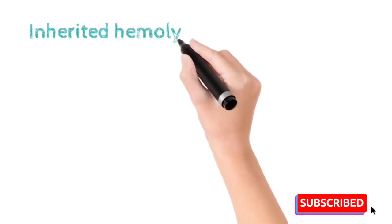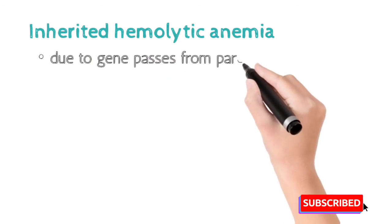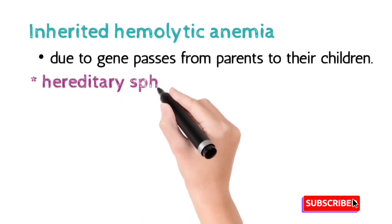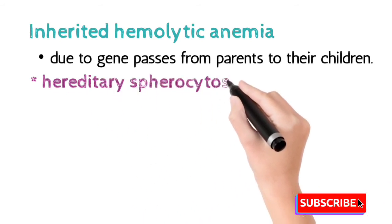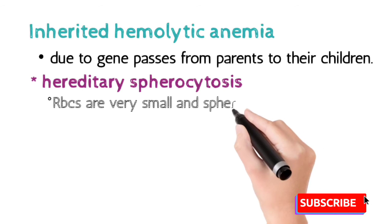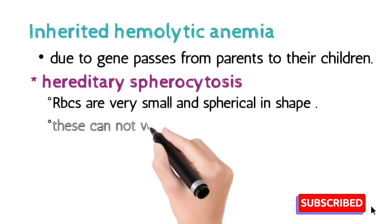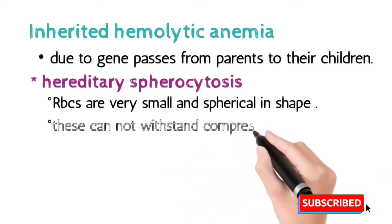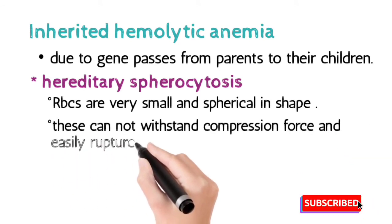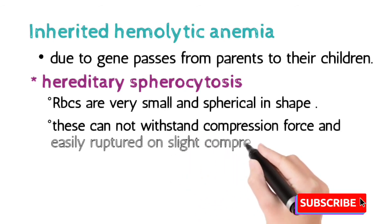Inherited hemolytic anemia is a condition during which genes pass from parents to their offspring. It contains two conditions. Number one is hereditary spherocytosis — the type during which RBCs are very small and spherical in shape. These cells cannot withstand compression forces and easily rupture even at slight pressure applied on them.